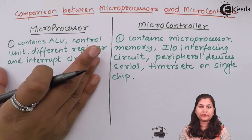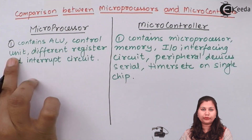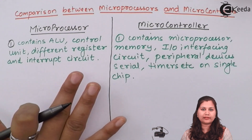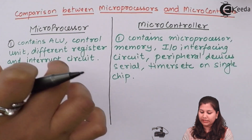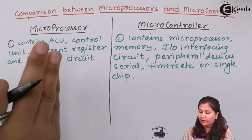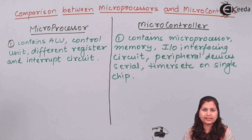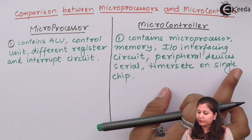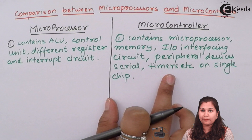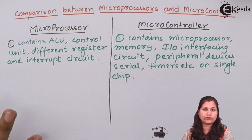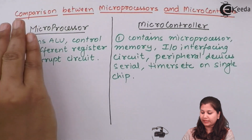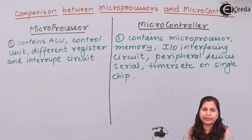In a microprocessor, we have the ALU, control unit, timing and clock circuit, different registers, and interrupt circuit — only these things are involved. Whereas in a microcontroller, it itself contains a microprocessor, memory, input-output interfacing circuit, peripheral devices, serial and timing circuits, etc., all on the single chip. We can say that a microcontroller is a computer on the same chip, and the microprocessor is itself a part of the microcontroller.